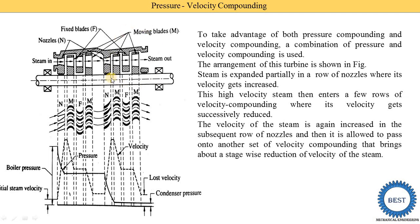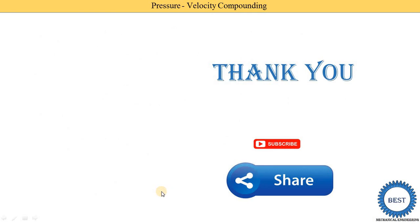In the second stage of velocity compounding, the velocity is again subsequently reduced and mechanical work is produced. After this nozzle the steam enters the moving plates where velocity is reduced and pressure is constant. Then it enters the fixed plate where both parameters are constant — velocity is constant and pressure is constant. Then it enters the moving plates where velocity is reduced and pressure remains as it is. Then this steam is supplied to the condensers.